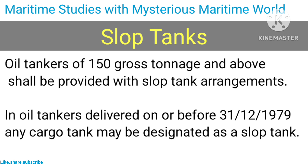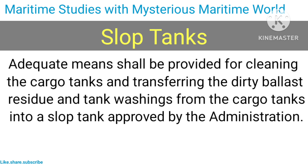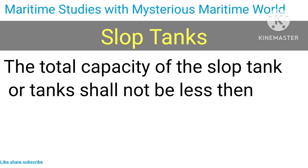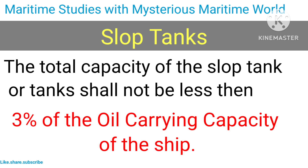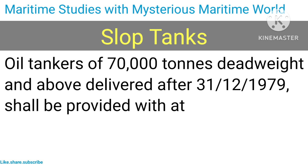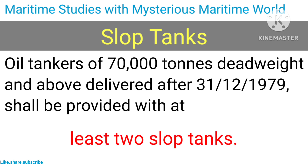Slop tanks: oil tankers of 150 gross tonnage and above shall be provided with slop tank arrangements. In oil tankers delivered on or before 31 December 1979, any cargo tank may be designated as a slop tank. Adequate means shall be provided for cleaning cargo tanks and transferring dirty ballast residue and tank washings into a slop tank approved by the administration. The total capacity of the slop tank or tanks shall not be less than 3% of the oil-carrying capacity of the ship. Oil tankers of 70,000 tons deadweight and above delivered after 31 December 1979 shall be provided with at least two slop tanks.